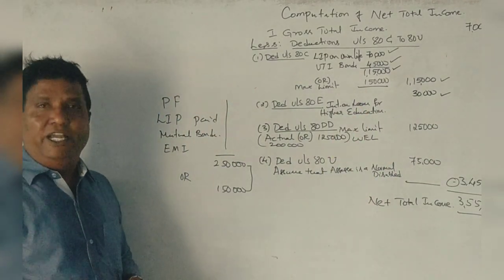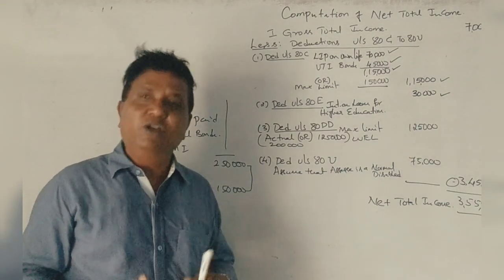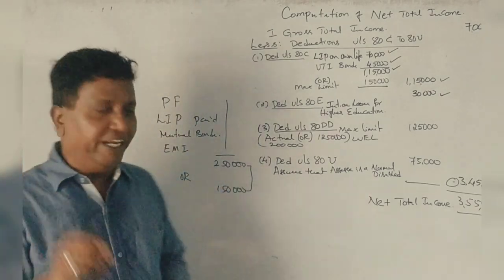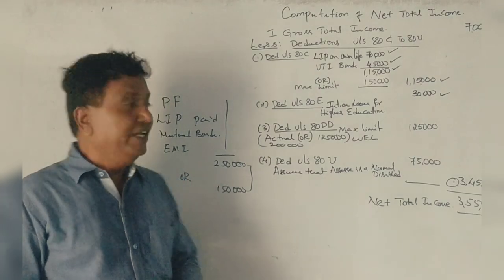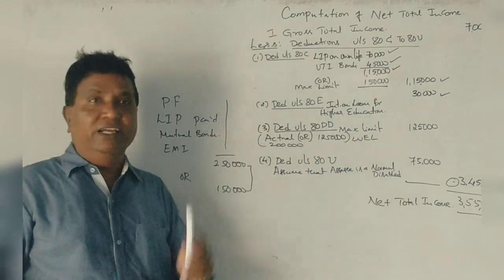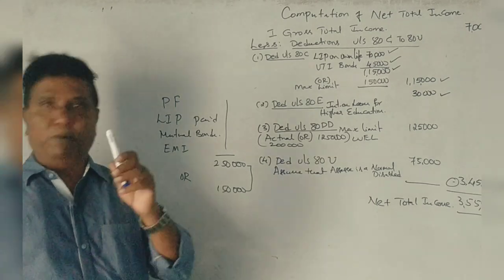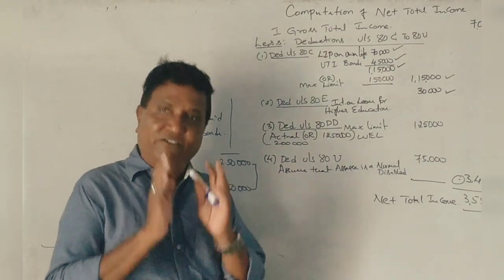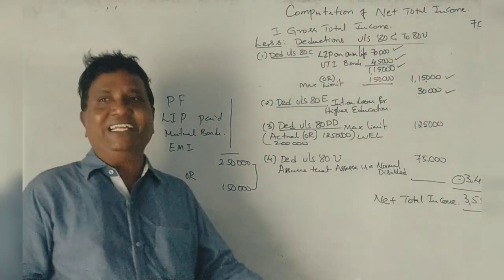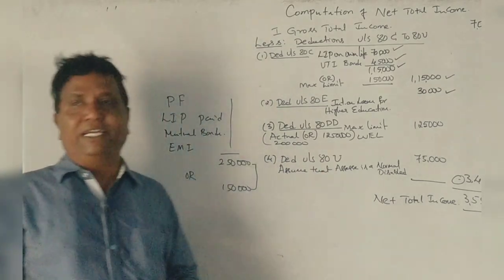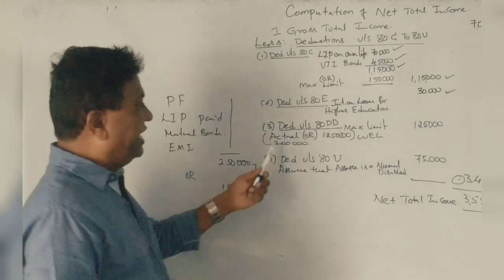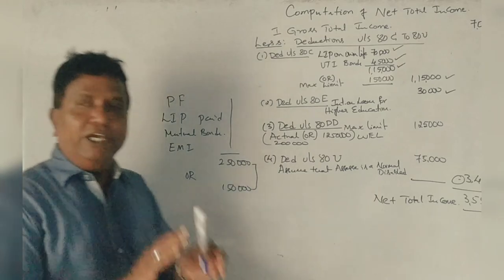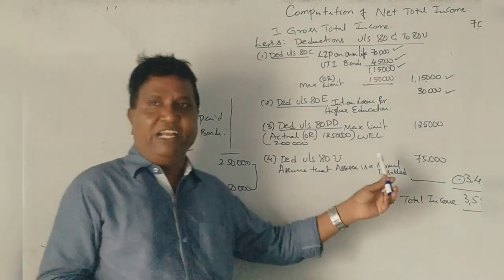The younger brother is dependent but he is disabled — dependent and disabled. He is specified and severely disabled. Under Section 80DD, for a dependent who is disabled, the normal disability deduction is seventy-five thousand rupees, and for severely or specifically disabled, the deduction is one lakh twenty-five thousand rupees. The maintenance expenses are two lakhs, but the maximum deduction allowed is one lakh twenty-five thousand rupees.